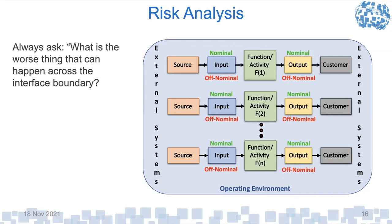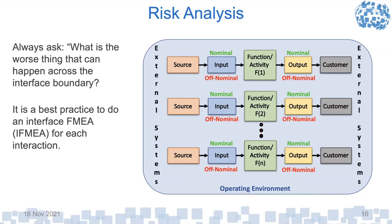There's risk involved in all these interactions. Always ask: what is the worst thing that can happen across the interface boundary? It's not enough to just define the nominal expected inputs and outputs — you have to ask what an off-nominal case could be. A lot of organizations do what they call an interface FMEA, or IFMEA, for each interaction to identify what could go wrong and how to protect against it. In today's world of cybersecurity, that's especially important. For example, in Houston's petrochemical plants, there are thousands of control modules designed 15 years ago with no cybersecurity — someone demonstrated that from outside the gate with an iPhone they could cause a tank to overfill. We have to define and manage each risk at the interfaces.